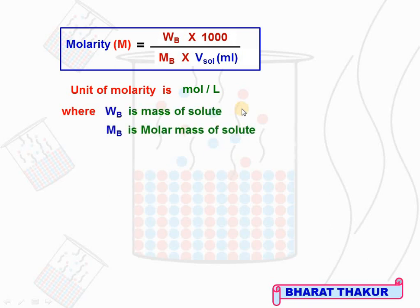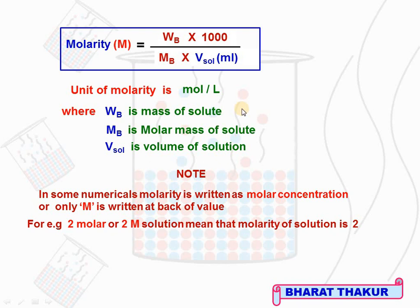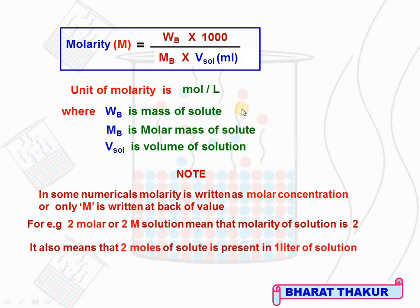Where WB is mass of solute, MB is molar mass of solute, and V(sol) is volume of solution. Important: in numericals, molarity is also written as molar concentration or as capital M after the value — for example, 2 molar or 2M solution means molarity is 2. This also means 2 moles of solute are present in 1 liter of solution. Knowing molarity allows us to identify total moles of solute and total volume of solution.